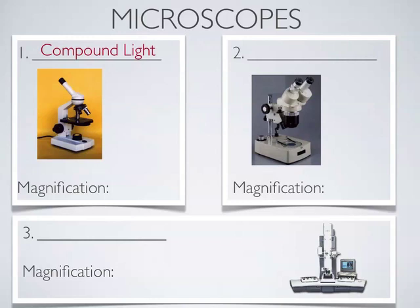What does compound mean? Think of a compound word — compound sort of means multiple parts. This is called a compound microscope because the image gets magnified in two places: it gets magnified once down here as light goes through the objective lens, and once up here as light goes through the eyepiece. That's why it's called a compound microscope.